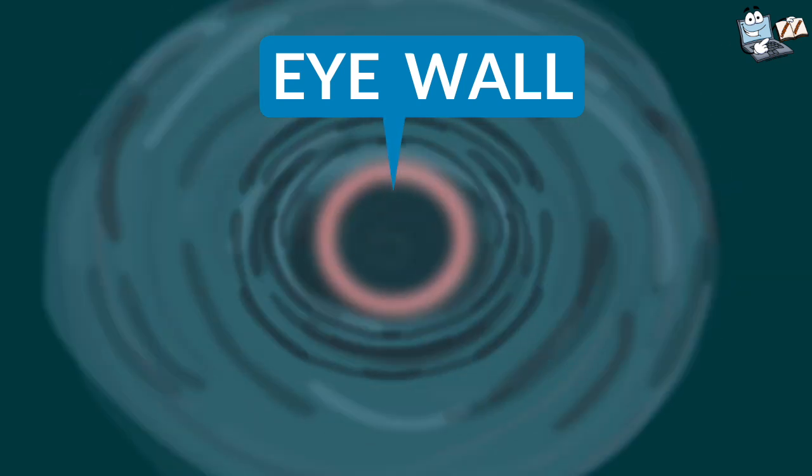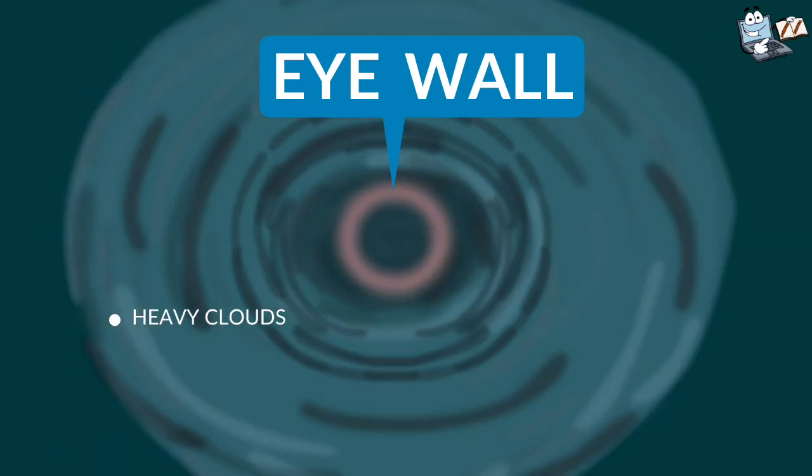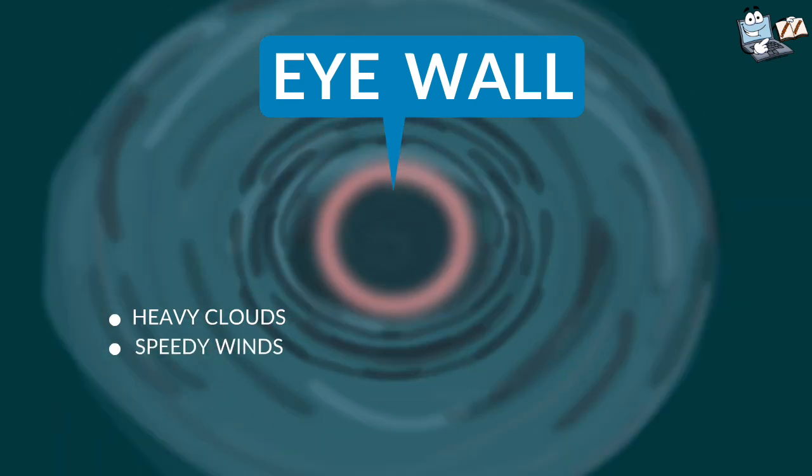The eye wall is surrounded by very heavy clouds. This is the most terrible part of the hurricane and the highest speed winds are found here.